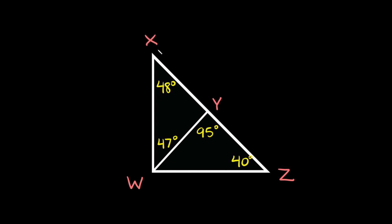Alright, here's the last example. So again we have our two triangles and we just want to fill in the missing angles first. So for X, W, Y, we have 48, we have 47, so that means this one must be 85 degrees. And then for this angle over here this is 95, this is 40, so then this one must be 45 degrees. So now that we've found the missing angles, the next thing again is just trying to find the shortest side of each triangle.